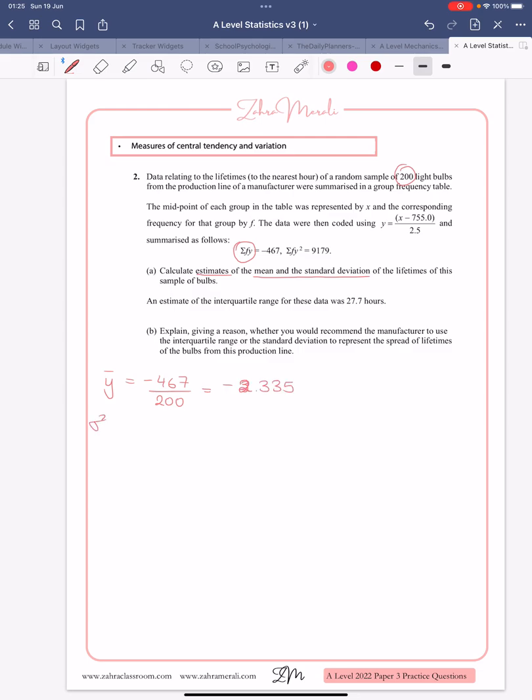And then our standard deviation, we're told, is the sum of f y squared, divided by n, minus our mean squared. So 2.335, and it's negative, so if you square it, it's going to become positive, and that gives us our variance. To get our standard deviation, we've got to take the square root of that, and we're left with 6.36.